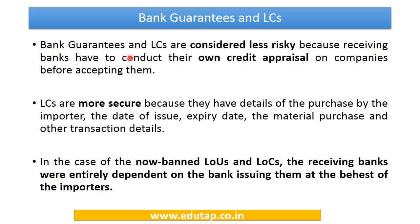Bank guarantees and letter of credits are considered less risky because the receiving bank has to conduct its own credit appraisal before accepting them. They also contain details of the purchase by the importer — date of issue, expiry date, material purchased, and other transaction details — making them more detailed and less risky. In the case of now-banned LOUs and LOCs, the receiving bank was entirely dependent on the bank which issued them at the behest of the importers.